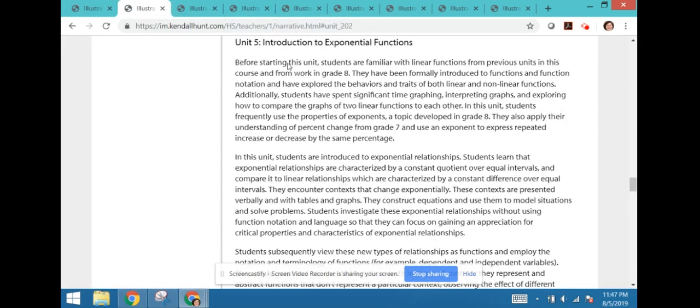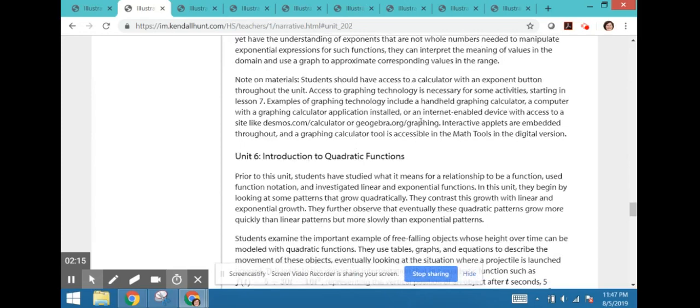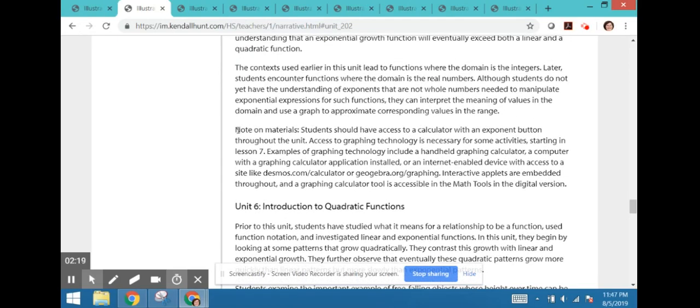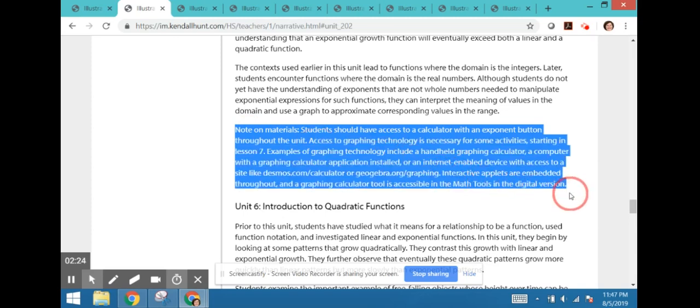Let's look at some examples. This comes from the Algebra 1 Unit 5 Narrative in the Course Guide, and I've chosen it because it gives some information about digital tools and the expectation to have either a handheld graphing calculator if your school has those, or computers with internet access to use the applets provided through Desmos or GeoGebra.